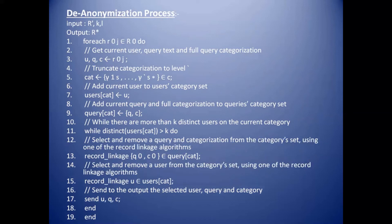Here is the de-anonymization algorithm. Select and remove a user from the categorized design using one of the record linkage algorithms. Here, the attacker can see duplicate information of the user.